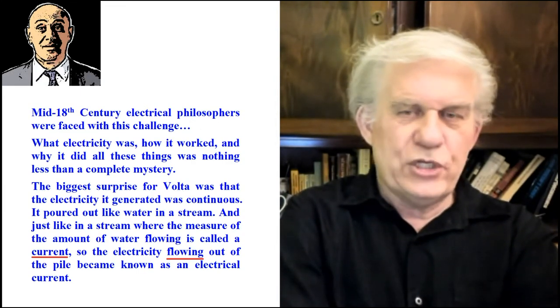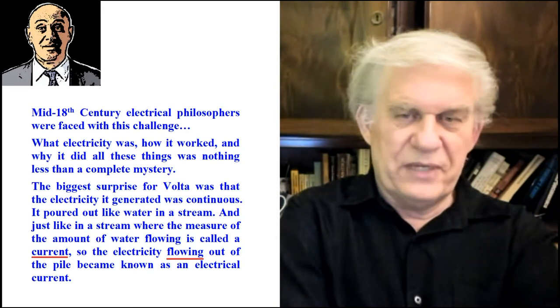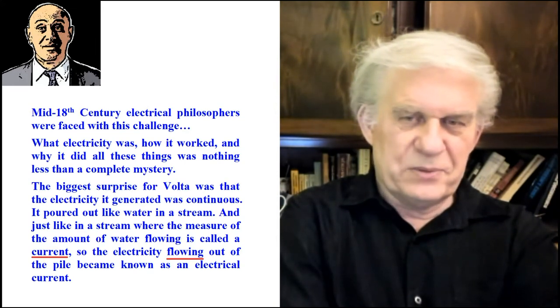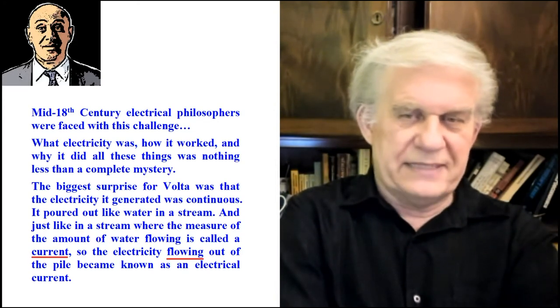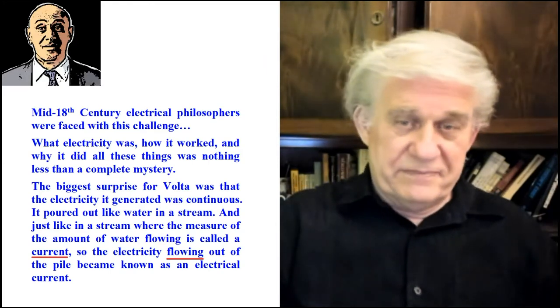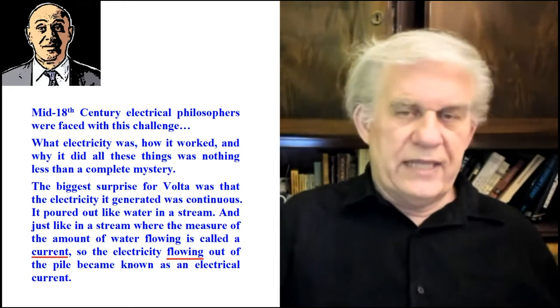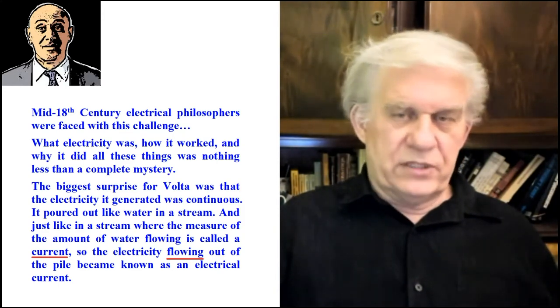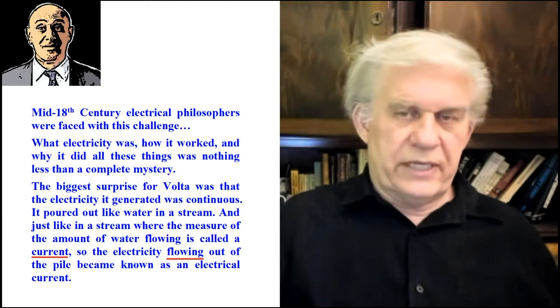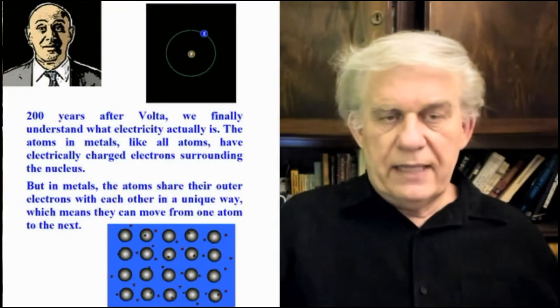And just like a stream where the measure of the amount of water flowing is called a current, so the electricity flowing out of the pile became known as an electrical current. So this is where we get the notion that we have something flowing. This is going to be so bad for humanity, because now we've had 200 years of this flowing stuff. Nobody knows what's flowing. They say it's electrons, but then they can't explain their atom. What is it that's flowing?